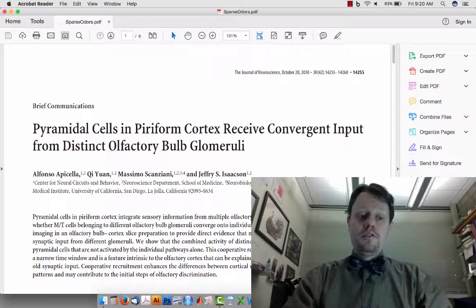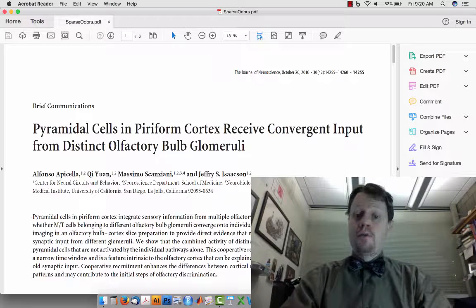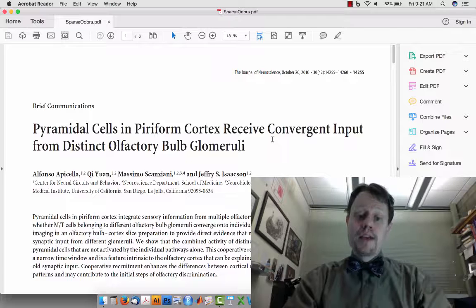The paper that I want to use to illustrate this is this one here, talking about the way that cells in piriform cortex, which is the primary input from the olfactory system, receive input. From the title already we can see that we're talking about convergent input from different regions of the olfactory bulb.